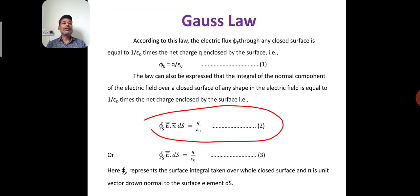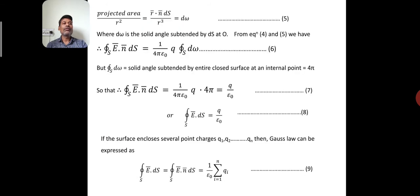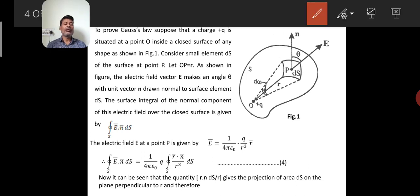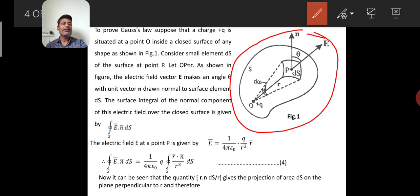Now we go towards the proof of Gauss's Law. For the proof, we first consider a closed surface. Inside that closed surface, a number of charges are situated. You can consider any shape or any size of closed surface — it may have any number of faces — but the important thing is that the surface is closed, and inside it, charges are situated anywhere in any number.